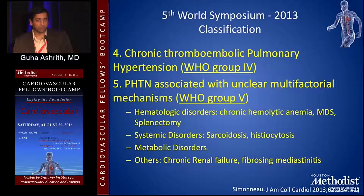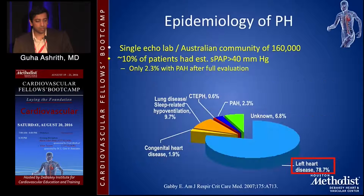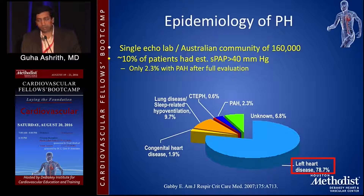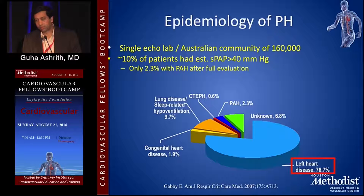WHO Group 5 covers miscellaneous causes with unclear multifactorial mechanisms, including hematologic disorders, splenectomies, chronic renal failure, and fibrosing mediastinitis causing pulmonary hypertension. Regarding epidemiology, based on an echo-based study, only about 10% of patients having an echocardiogram have pulmonary hypertension, and only 2.3% of them have PH after full evaluation. There is also a French registry where the incidence of PAH is around 5 to 8 per million per year.